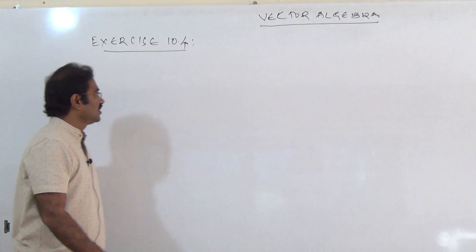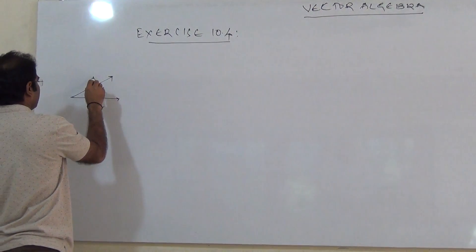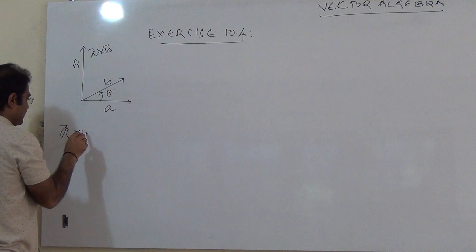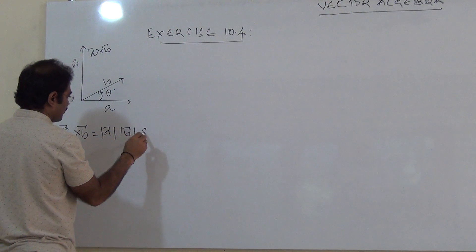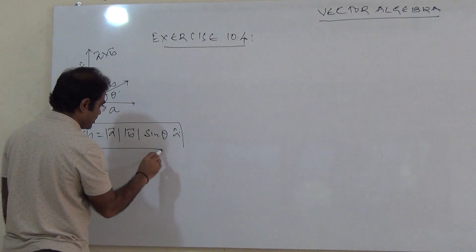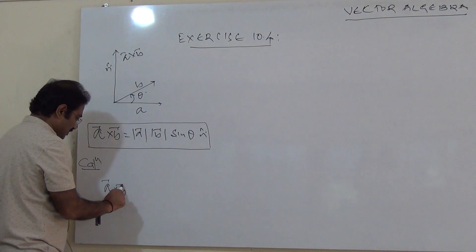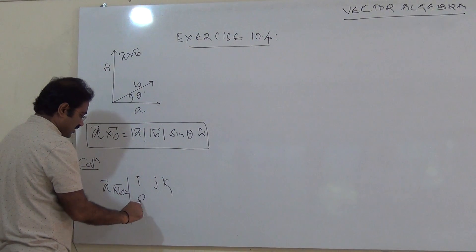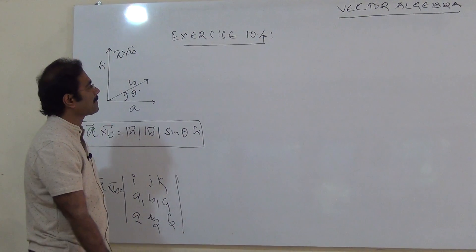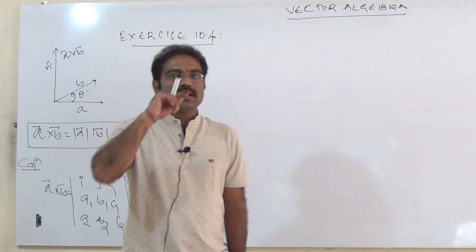The vector product: suppose there are two vectors A and B, and if theta is the angle between them, then the cross product A×B equals magnitude of A, magnitude of B, sine theta into n-cap, where n-cap is the unit vector perpendicular to the plane containing both A and B — that indicates the direction. For calculation, A×B equals the determinant with i, j, k and direction ratios a1, b1, c1 and a2, b2, c2.